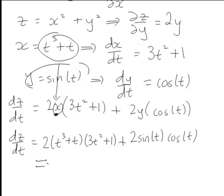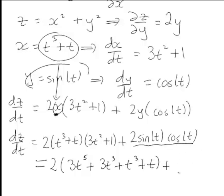Expanding these brackets, that becomes 2(3t⁵ + 3t³ + t³ + t), all plus 2sin(t)cos(t). We could leave 2sin(t)cos(t) like that, or by a double angle formula in trigonometry, that could just be written as sin(2t).